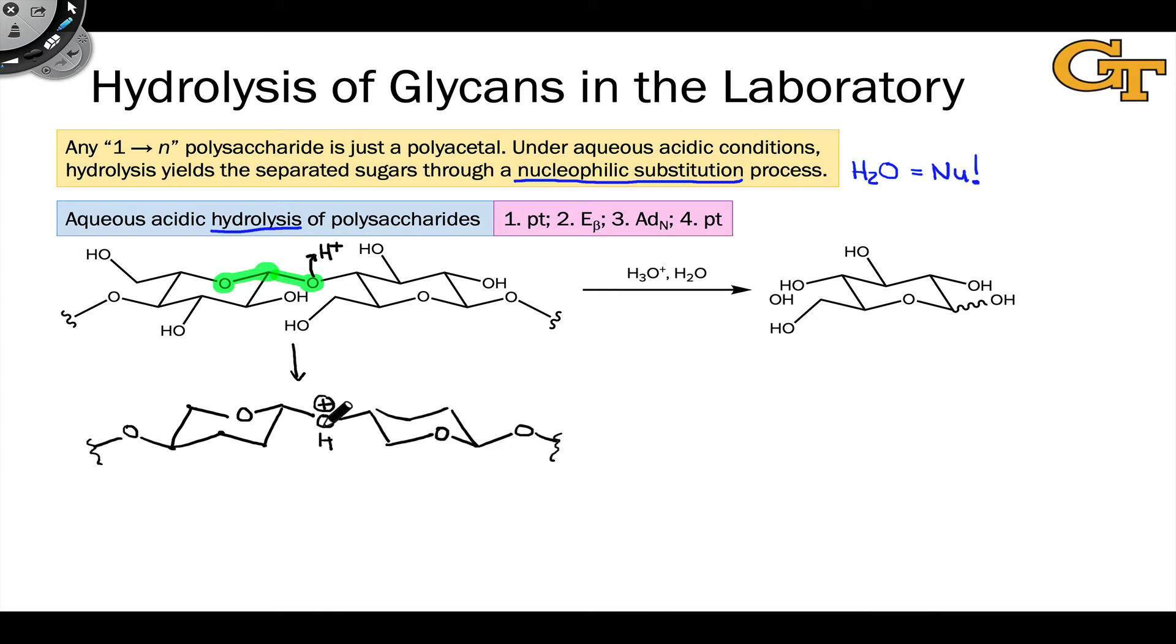After this proton transfer has occurred, we've primed this bond to break, essentially, in a DN or beta elimination step if we note that this oxygen has the ability to induce cleavage of the C-O bond. This leaves us with an oxocarbenium ion, an oxygen-stabilized carbocation, in other words, and also with a remaining polysaccharide chain. And so if this is happening on the end of the polymer chain, we've just got a polysaccharide with one fewer monosaccharide unit, or if this is happening in the middle, we've just broken the chain in half. To neutralize the oxocarbenium ion,